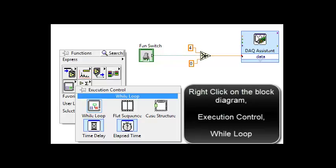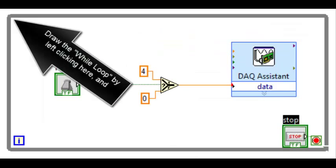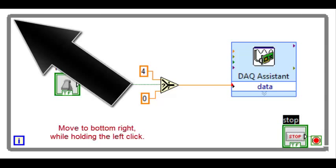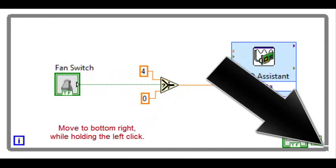Right click on the block diagram. Select execution control and while loop. Draw the while loop by left clicking here and move to the bottom right while holding the left click.